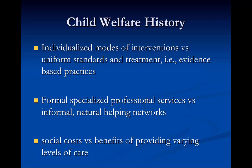Other areas involve formal specialized professional services versus informal natural helping networks. Should we let communities care for children through natural helping networks like spiritual communities, schools, and so forth — or should we have more specialized professionals and services? And then there's the whole social cost of not caring for children versus the benefit of providing levels of care.